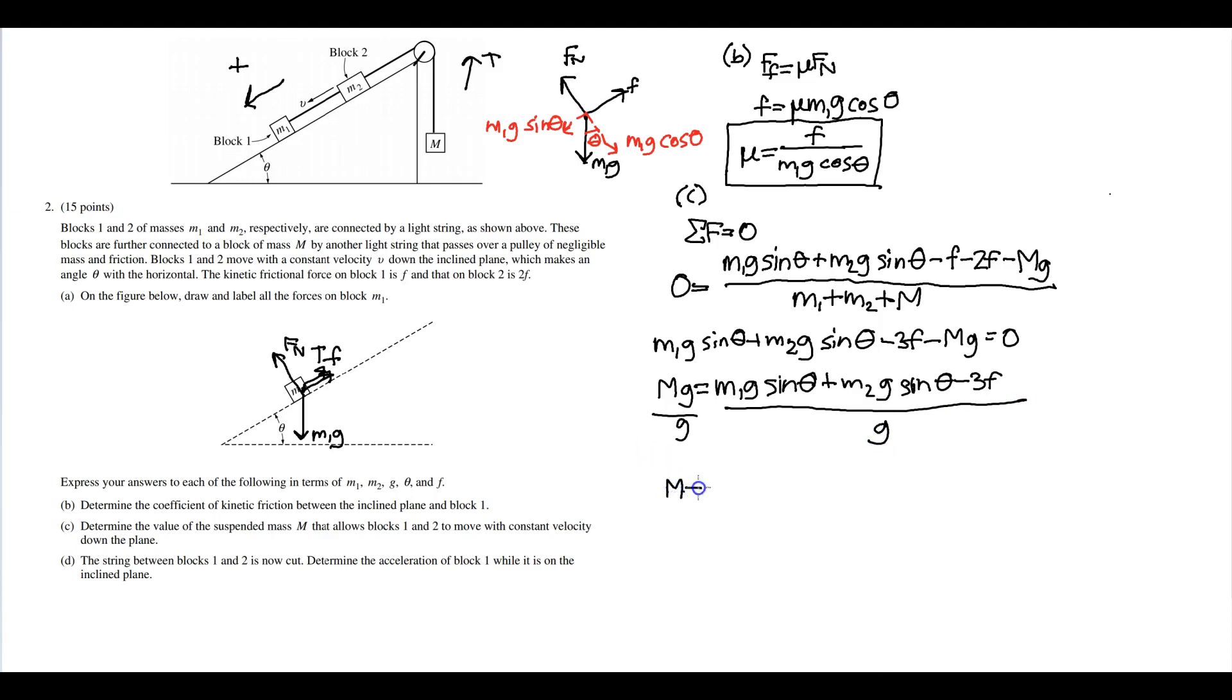And we get M equals—well, M will basically equal this. Or if you want, you could split this fraction up. Then the g's will go away from the first two terms, so that'll just be m1 sine theta plus m2 sine theta minus three f over g.